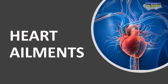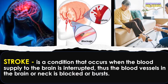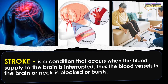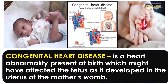Heart ailments. High blood pressure or hypertension is characterized by a sudden rise of blood pressure. Stroke is a condition that occurs when the blood supply to the brain is interrupted — the blood vessels in the brain or neck are blocked or burst. Heart attack occurs when a blood clot or fat gets lodged in blood vessels, blocking the passage of blood to the heart. Congenital heart disease is a heart abnormality present at birth which might have affected the fetus as it developed in the uterus.